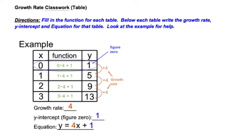Today we're finding the growth rate from a table and using that to write an equation. For each problem, you're going to fill in the function for each table. Below each table, you will write the growth rate, the y-intercept or figure zero, and the equation for that table.